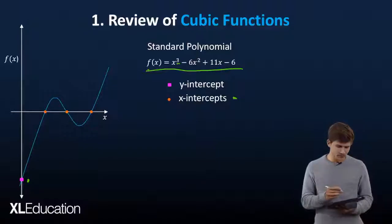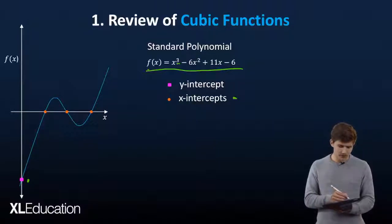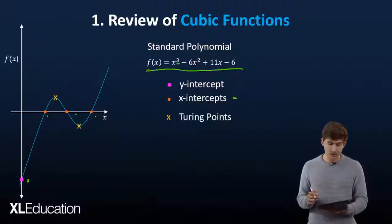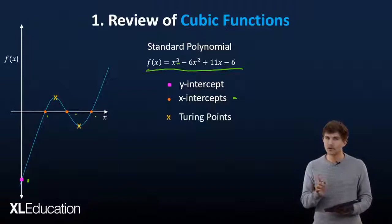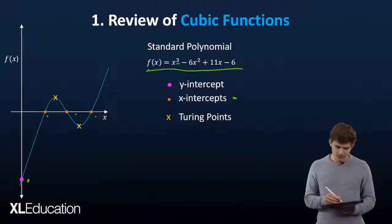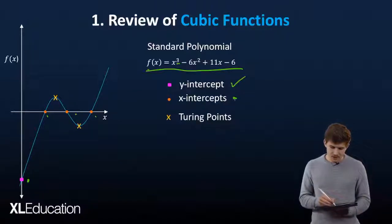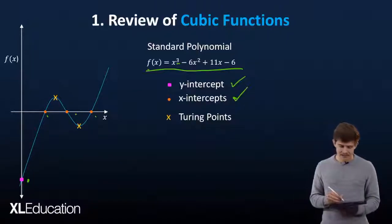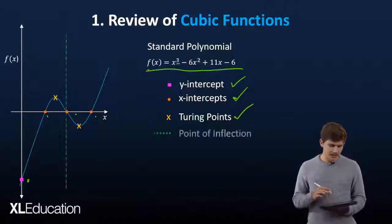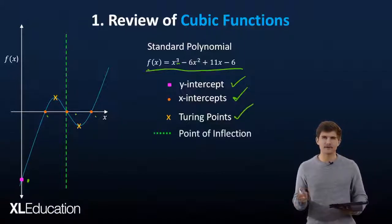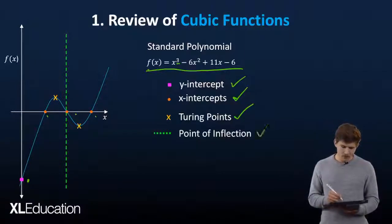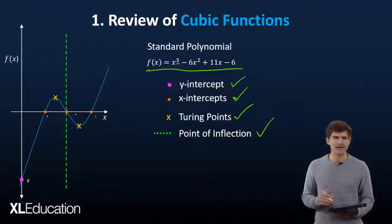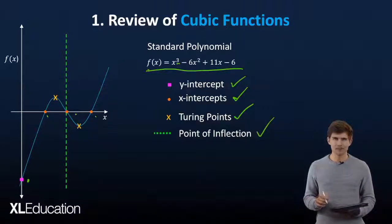In this case there will be one, two, and three x-intercepts. Then looking at the turning points — remember this is where the curve changes direction. So we find our y-intercept, our x-intercepts, our turning points, and the last part is finding the point of inflection. I'll go through all four of these with you now before sketching anything further.